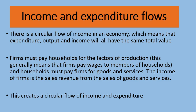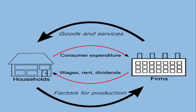In a society there are two types of people: households and firms. Households provide factors of production to firms — for example, I as a household person provide labor to a firm. In return, the firm pays wages. With those wages, I then purchase goods and services produced by the firm.